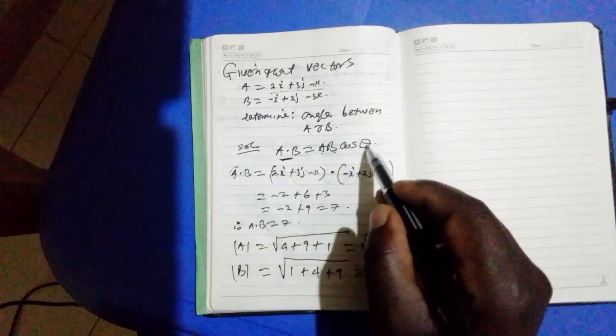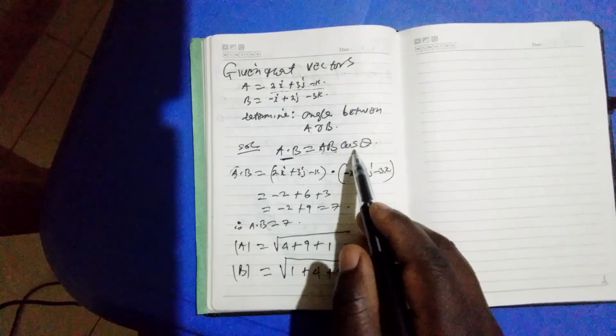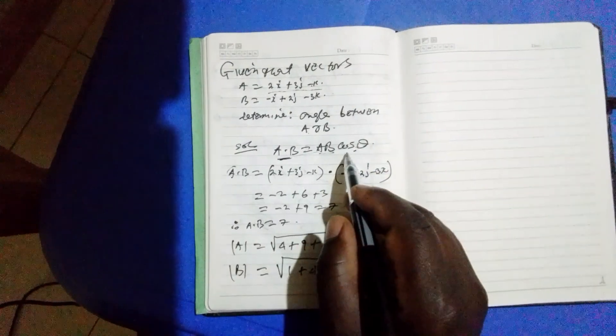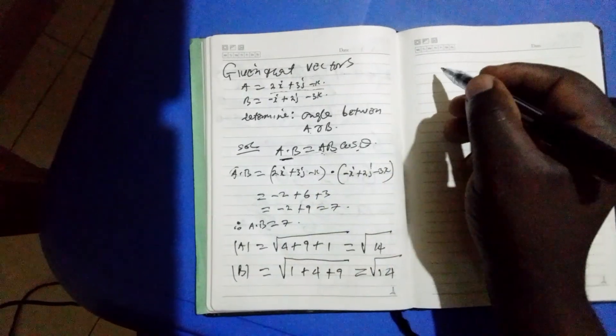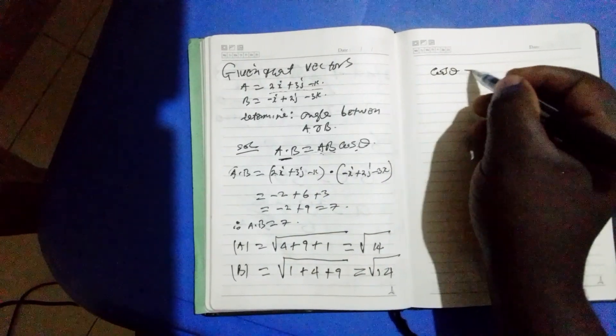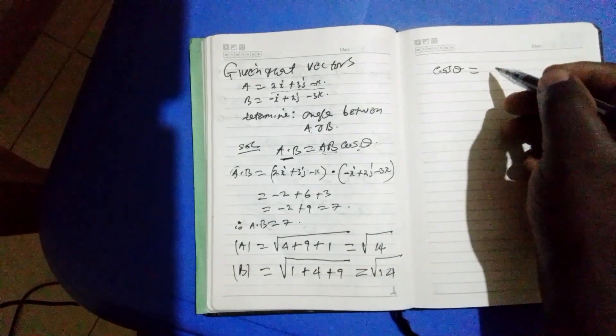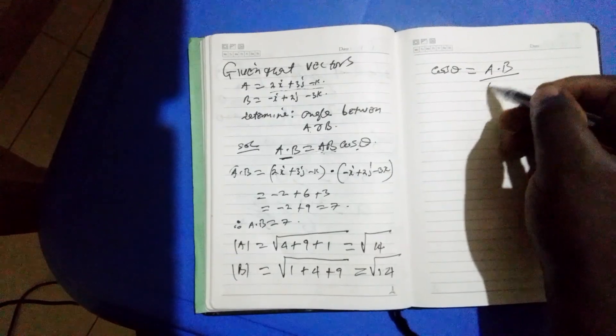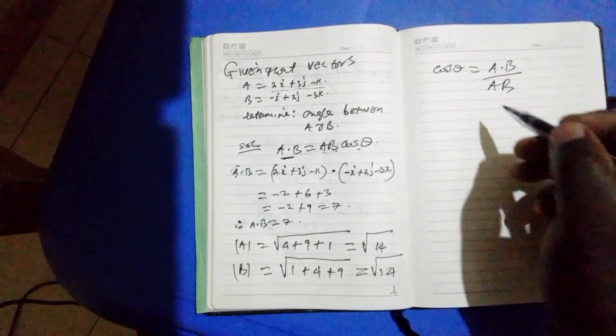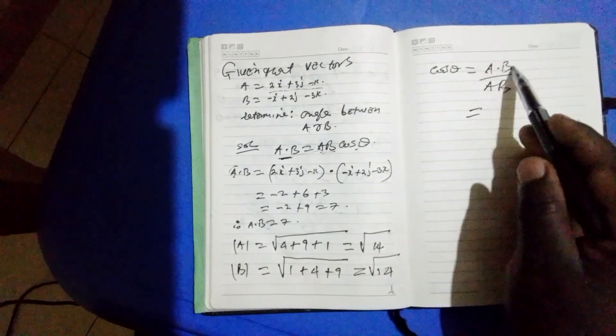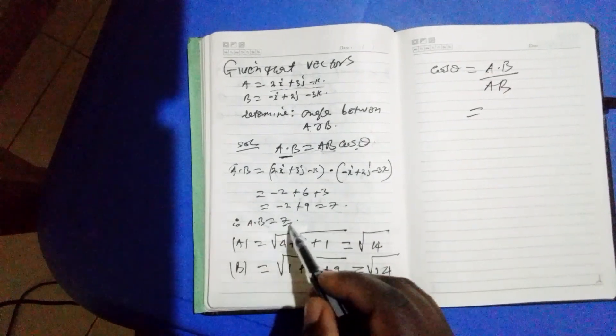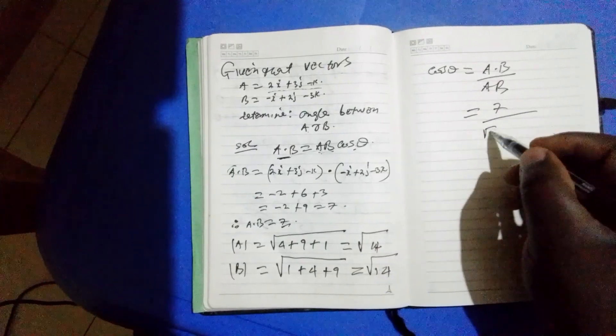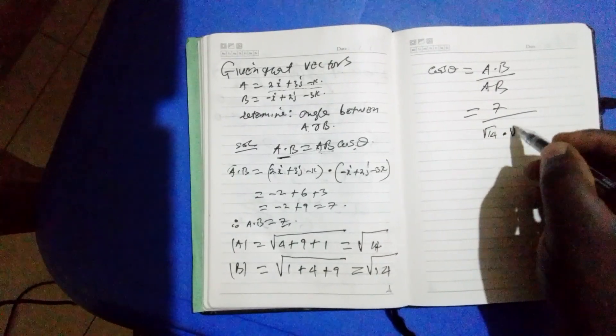Now we can substitute here. We can make cos theta the subject of the formula by dividing through by a times b. So cos theta equals a dot b over a times b, which equals to 7 over root 14 times root 14.